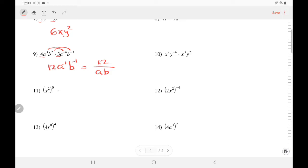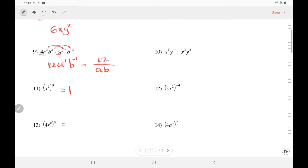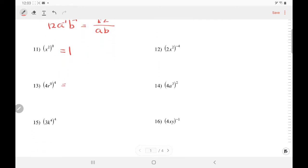In number 11, anything to the power of 0 is 1. Number 13: Let's take two steps. Let's simplify within the parenthesis. R to the 0 is 1 times 4 is 4, to the power of 4. That would be 4 times 4 times 4 times 4, or use a calculator: 16 times 16 would be 256.